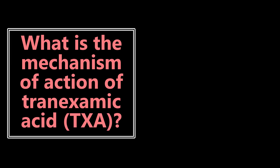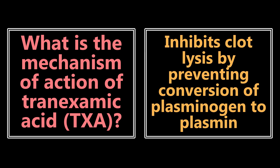What is the mechanism of action of tranexamic acid, or TXA? It's going to inhibit clot lysis by preventing conversion of plasminogen to plasmin. By doing that, clots are going to be able to form and are not going to be broken down, which is why we like to use it for things like epistaxis. You definitely need to know the mechanism of action of TXA.